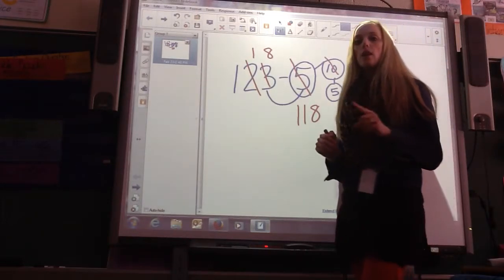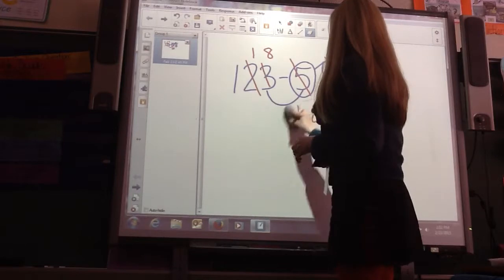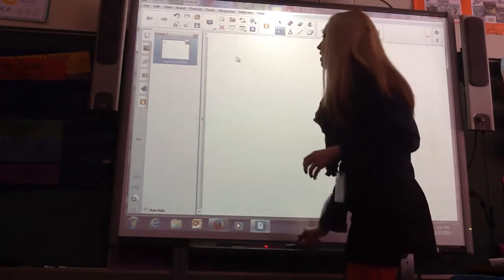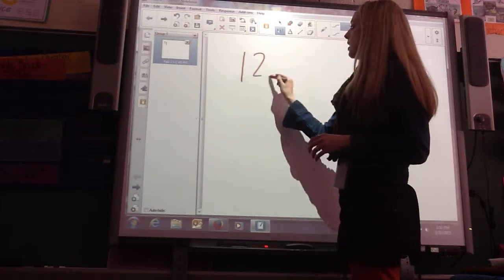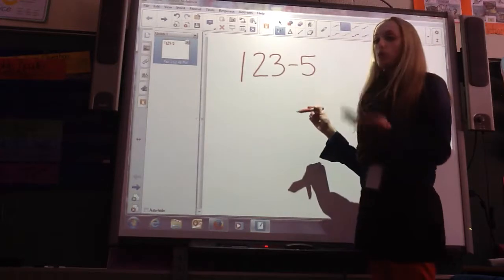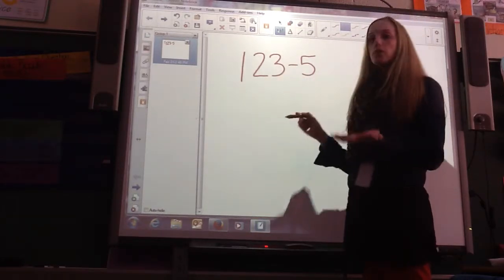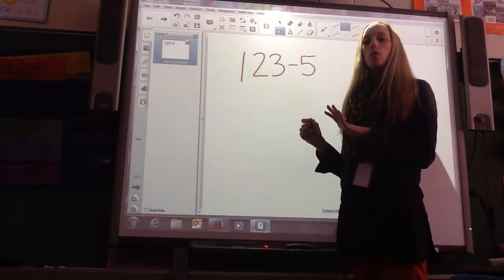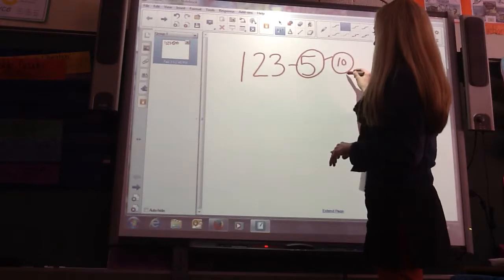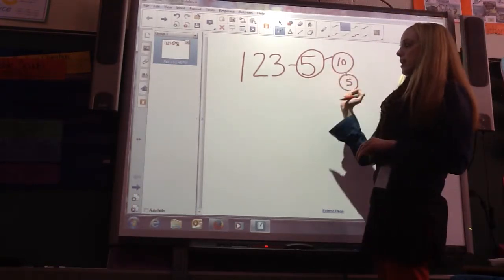I'm going to show you another way to also solve this problem. So, 123 minus 5. The same. What are we subtracting? Hundreds, tens, or ones? We're subtracting the ones. It would cause us to regroup. So, instead of regrouping, we're going to turn it into a 10. So, we'll turn this into a 10.